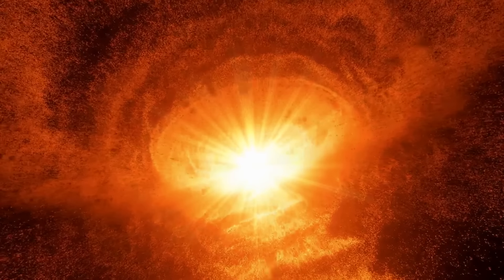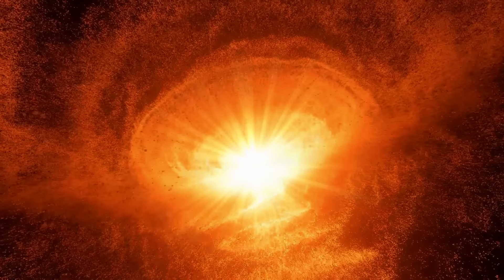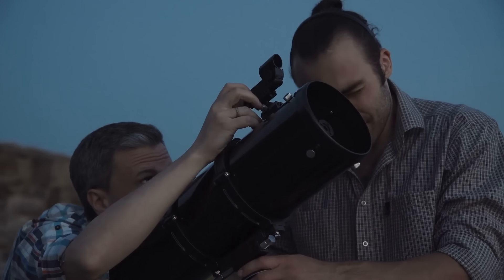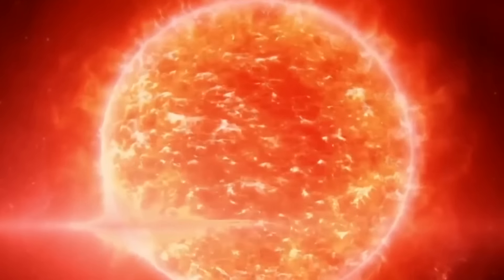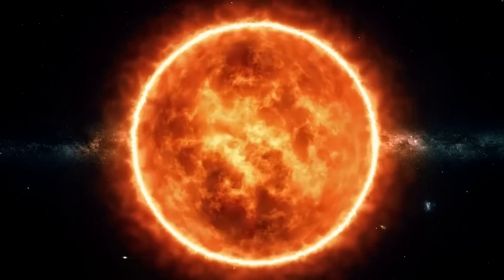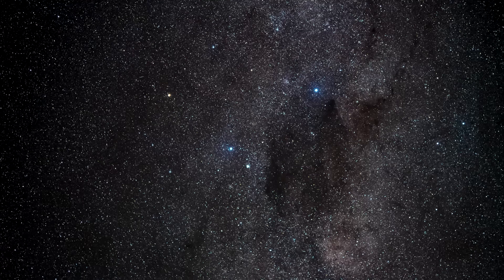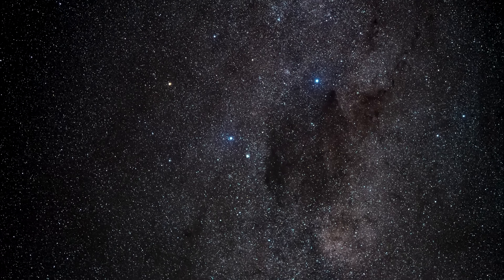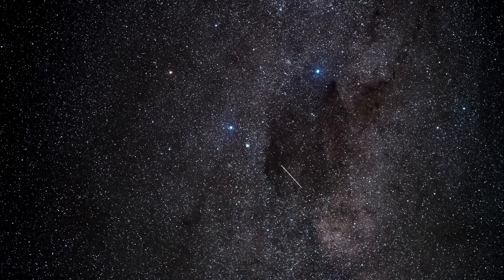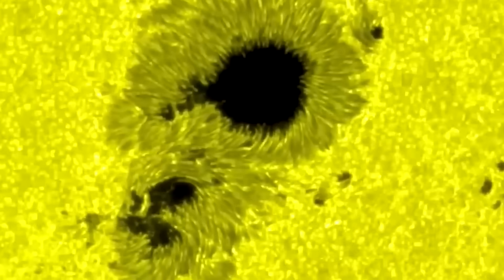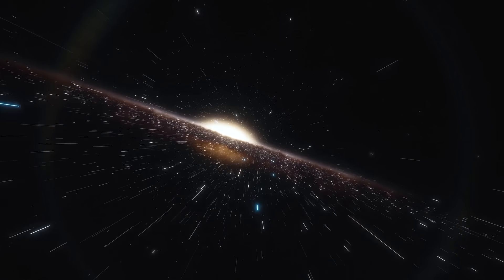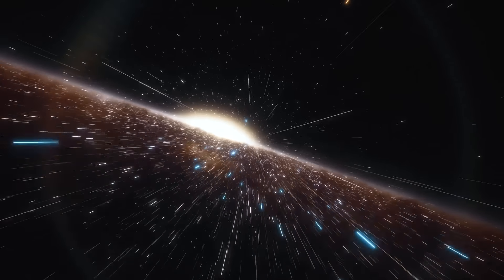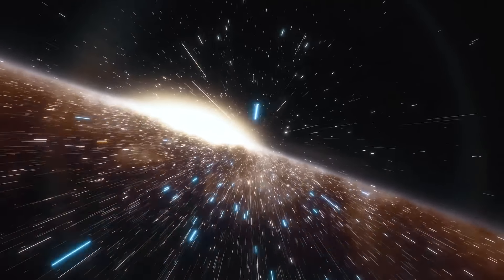Recently, Betelgeuse has been the focus of intense observation due to significant fluctuations in its brightness. Astronomers have noted that this normally bright star is undergoing an unusual dimming. Betelgeuse's dimming is particularly noteworthy as it typically ranks among the top 10 brightest stars in the night sky. This change has prompted various speculations and numerous theories.